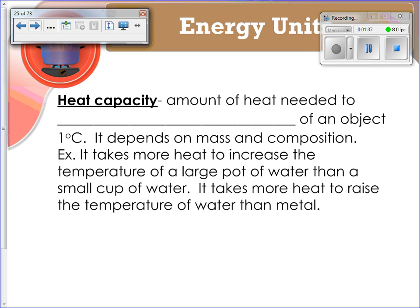Heat capacity is the amount of heat that is needed to raise the temperature of an object by one degree Celsius. This is going to depend on mass and composition. For example, it takes more heat to increase the temperature of a large pot of water than a small cup of water. It takes more heat to raise the temperature of water than of metal.